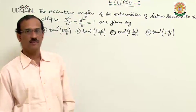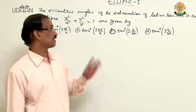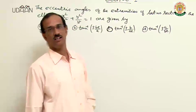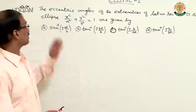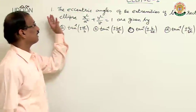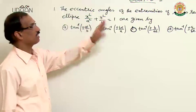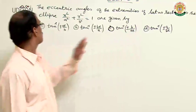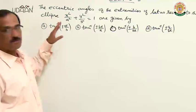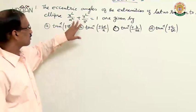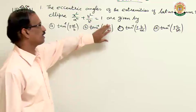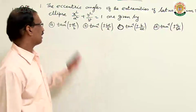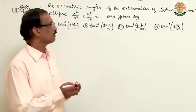Greetings of the day. Today we will discuss questions on ellipse. The question says that the eccentric angles of the extremities of the latus rectum to the ellipse x²/a² + y²/b² = 1 are given by these options.